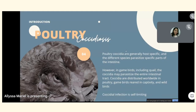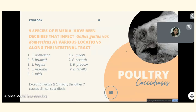Poultry coccidia are generally host-specific and different species parasitize specific parts of the intestine. However, in game birds including quail, the coccidia may parasitize the entire intestinal tract. Coccidia are distributed worldwide in poultry, game birds reared in captivity, and wild birds. This coccidial infection is also self-limiting. There are nine species of Eimeria that have been described to infect Gallus gallus variety domesticus at various locations along the intestinal tract.